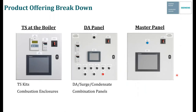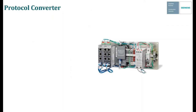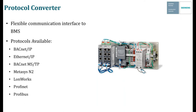We've covered touchscreens at the boiler — touchscreen kits and combustion enclosures — the DA panel consisting of DA, surge, and condensate panels plus combination panels, and the master panel. The last piece is the protocol converter, which is simply a communication interface to building management systems — a translator. It takes all the Modbus data from all these various devices and converts it to whatever you need: BACnet, Ethernet, BACnet MSTP, Metasys, LonWorks, Profinet, or Profibus. You can take one protocol converter, communicate to multiple touchscreens, and have one output going to the BMS.